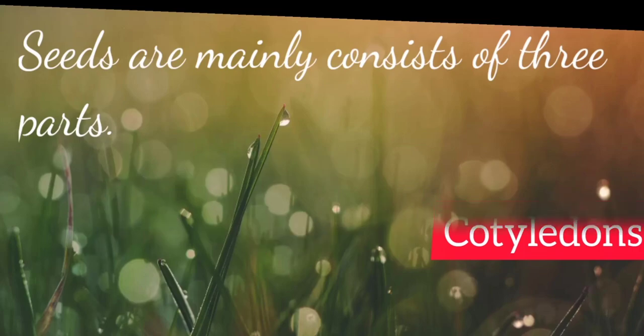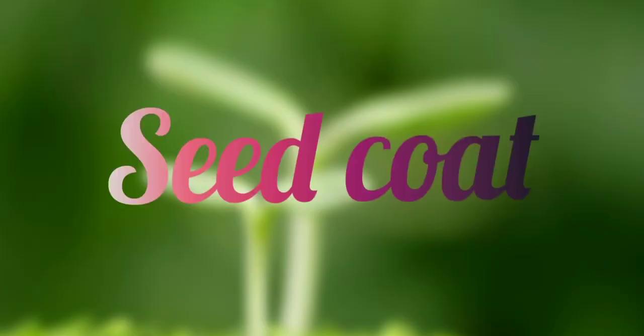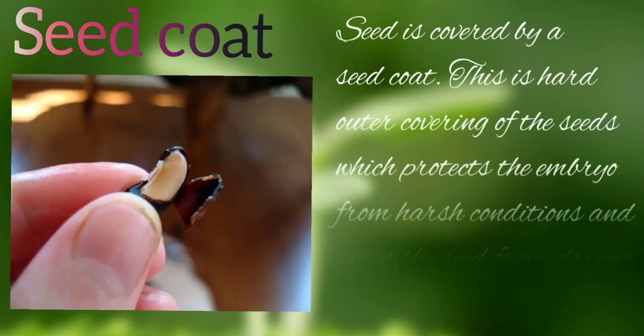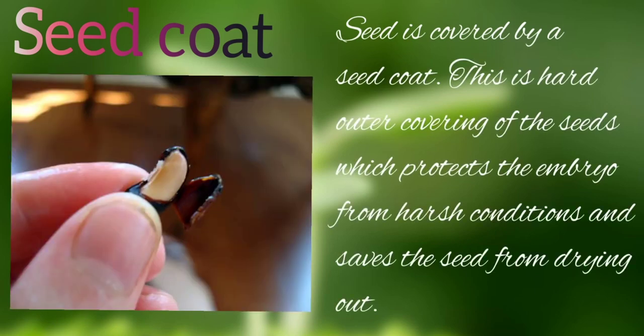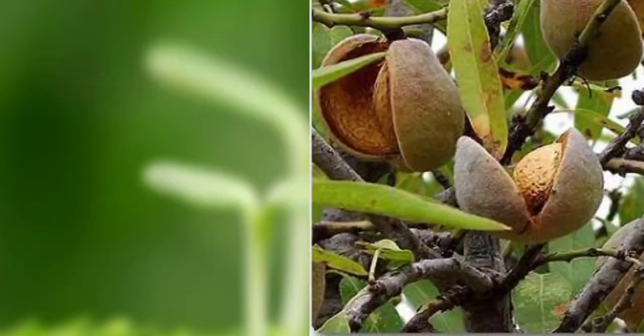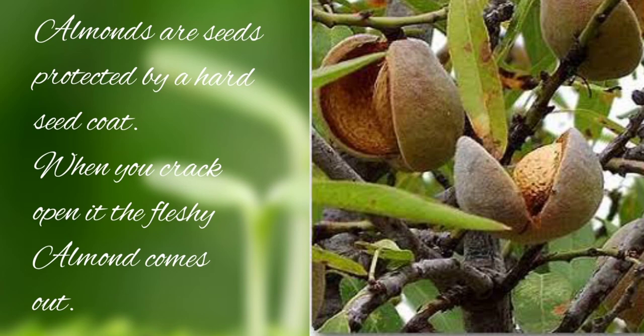First, we will study about the seed coat. The seed is covered by a seed coat — this is the hard outer covering of seeds which protects the embryo from harsh conditions and saves the seed from drying out. For example, almonds are seeds protected by a hard seed coat. When you crack it open, the fleshy almond comes out.